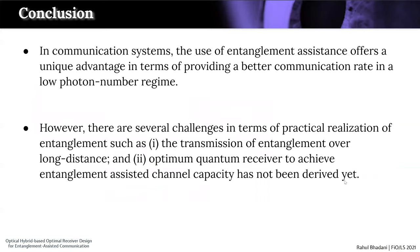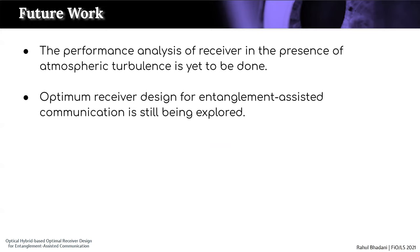In conclusion, in a communication system the use of entanglement assistance offers unique advantages in terms of providing a better communication rate in the low photon number regime. However, there are several challenges in terms of practical realization, such as the transmission of entanglement over long distances. Additionally, the optimum quantum receiver to achieve the entanglement assisted channel capacity has not yet been derived. As future work, we will analyze this receiver in terms of atmospheric turbulence, and we note that optimum receiver design for entanglement assisted communication is still being actively explored, so we expect more work in this area.